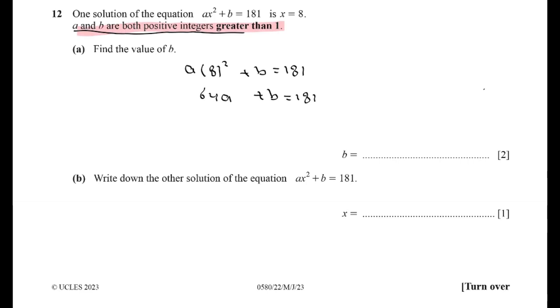We will try a by any number greater than one. Let's try 2: 64 times 2 plus b equals 181. 64 times 2 equals 128. 128 plus b equals 181. To find the value of b: 181 minus 128 equals 53. This is one possible value for b.